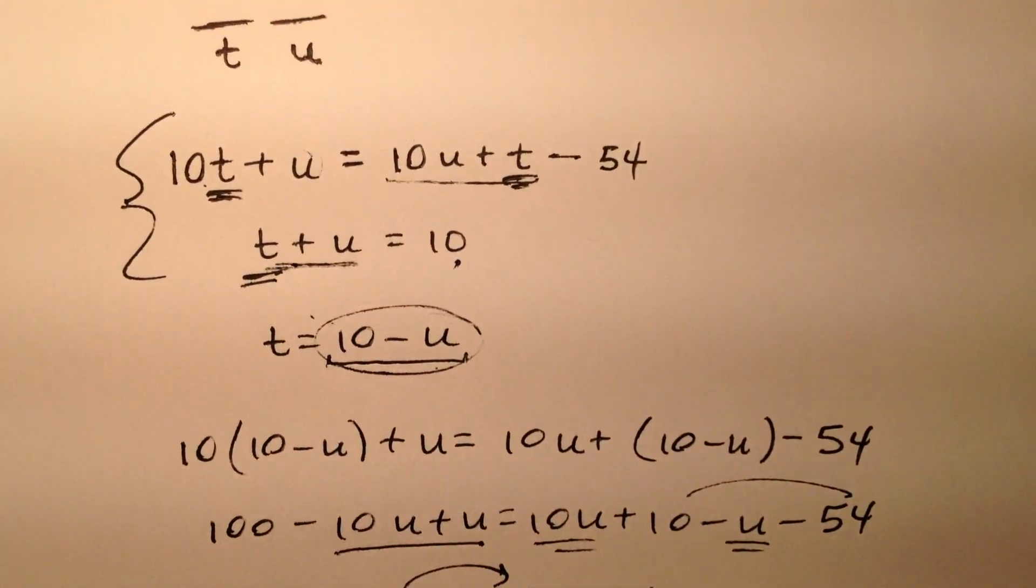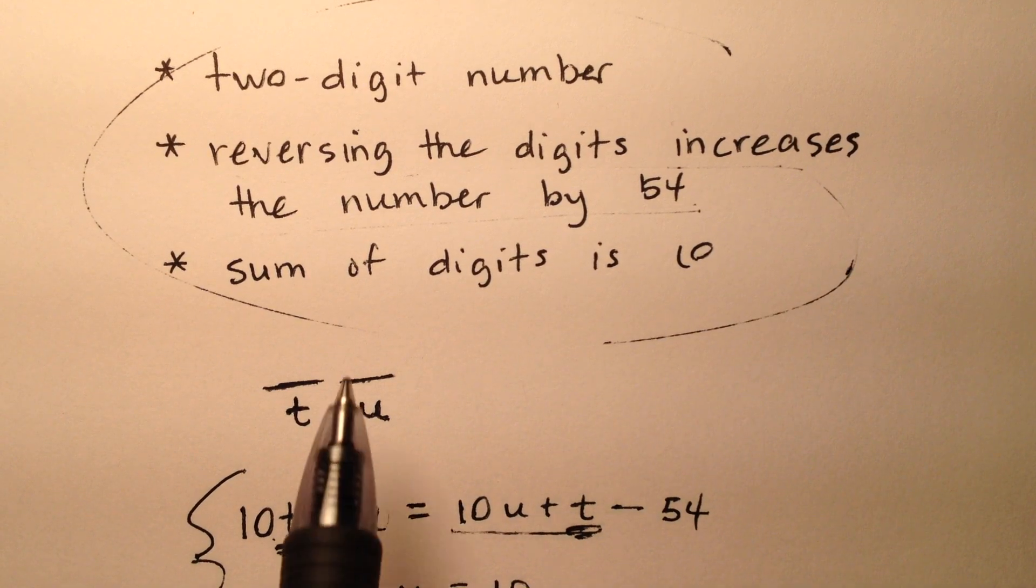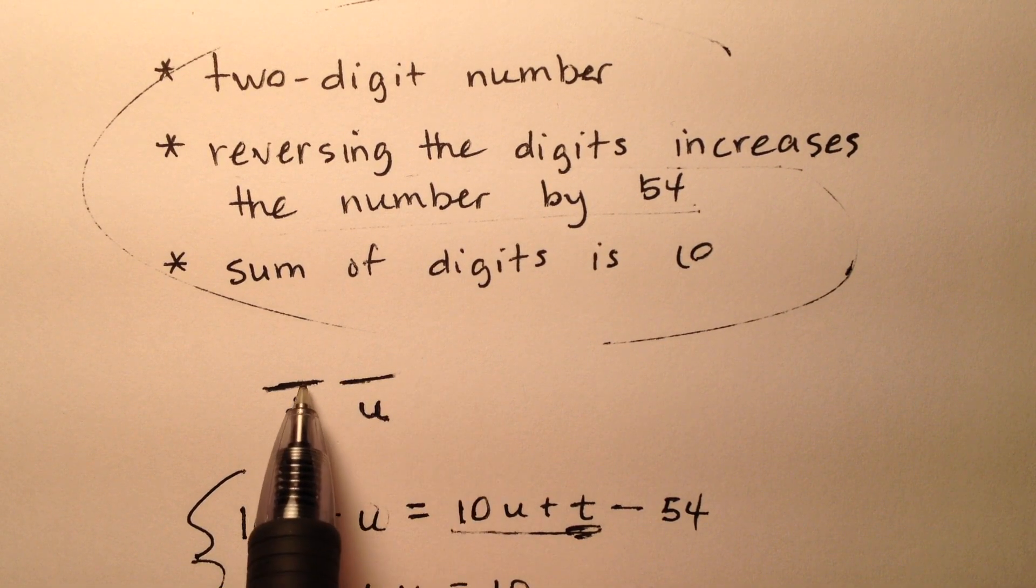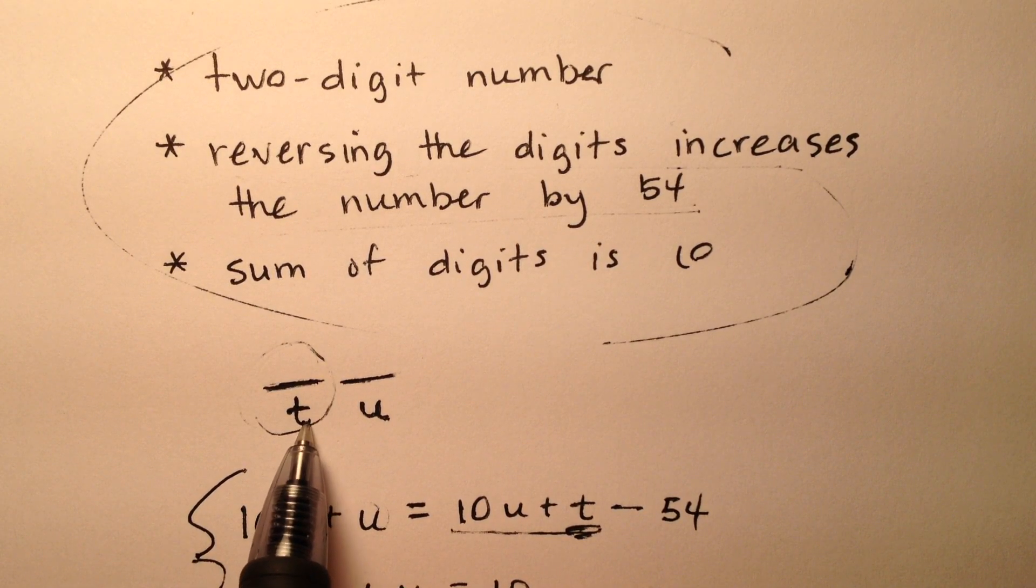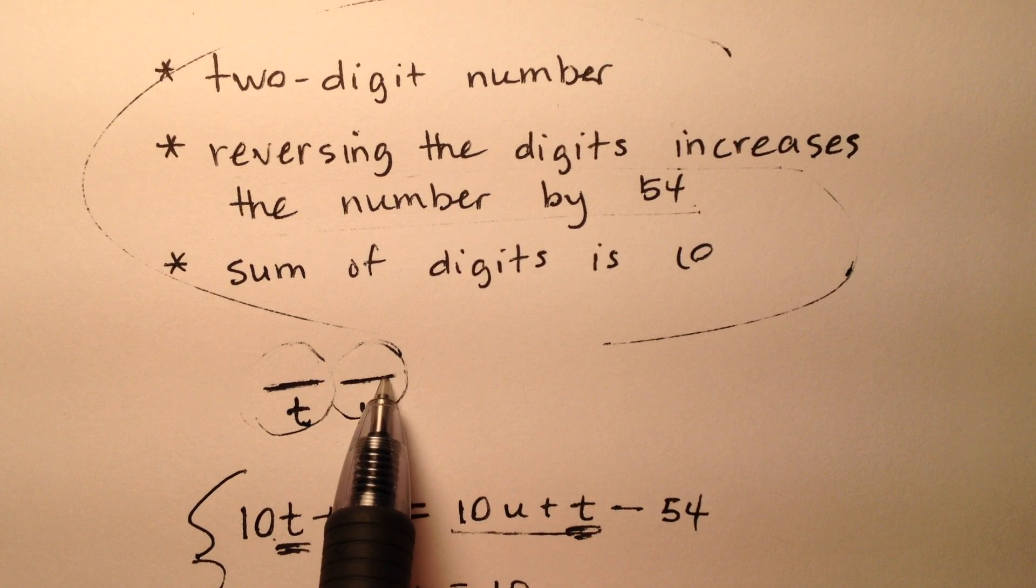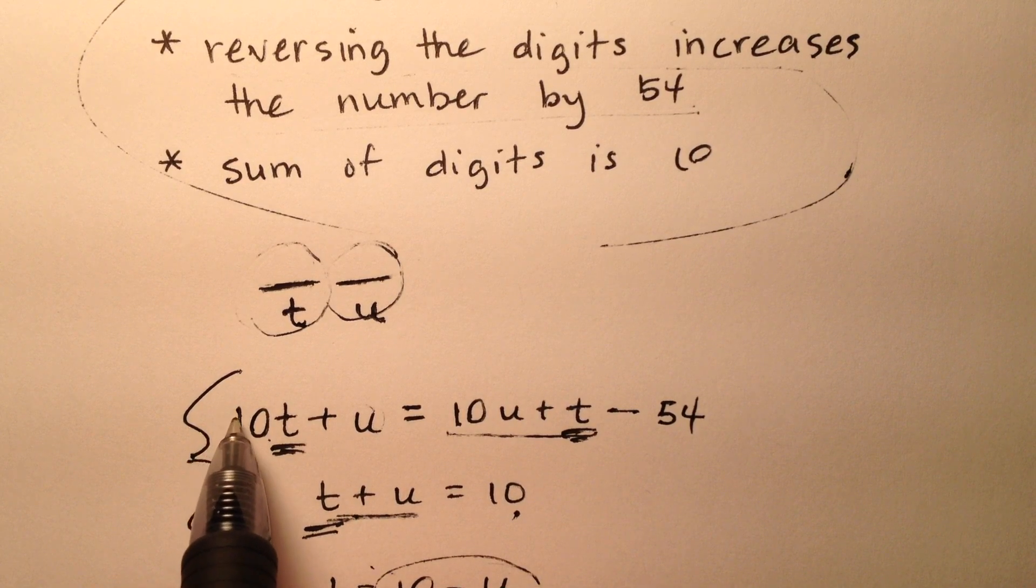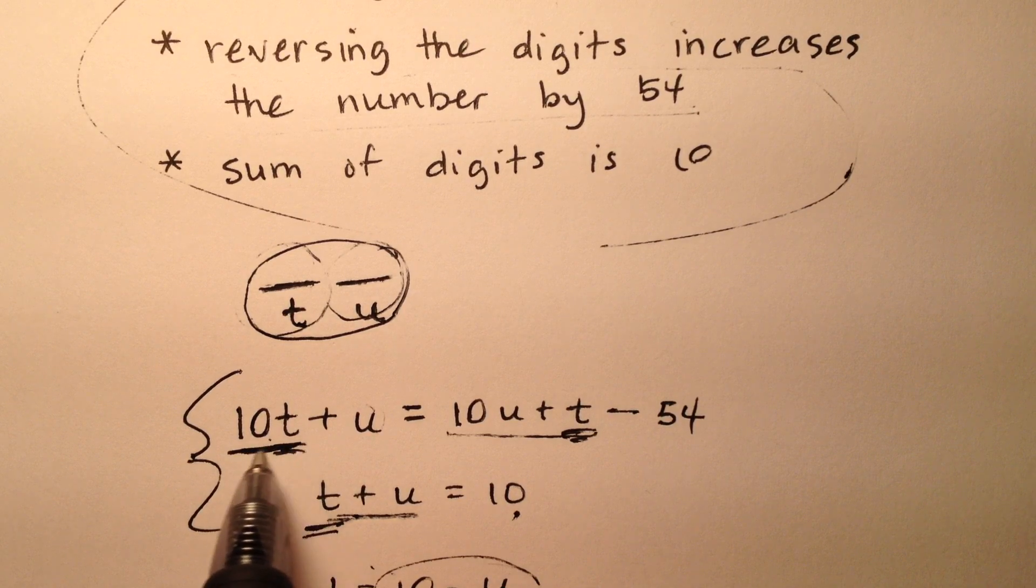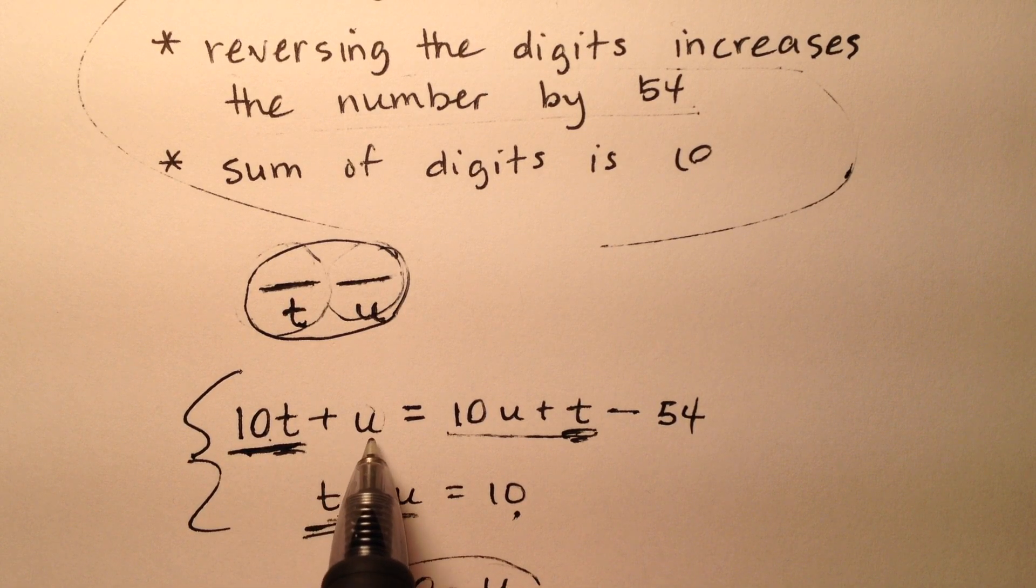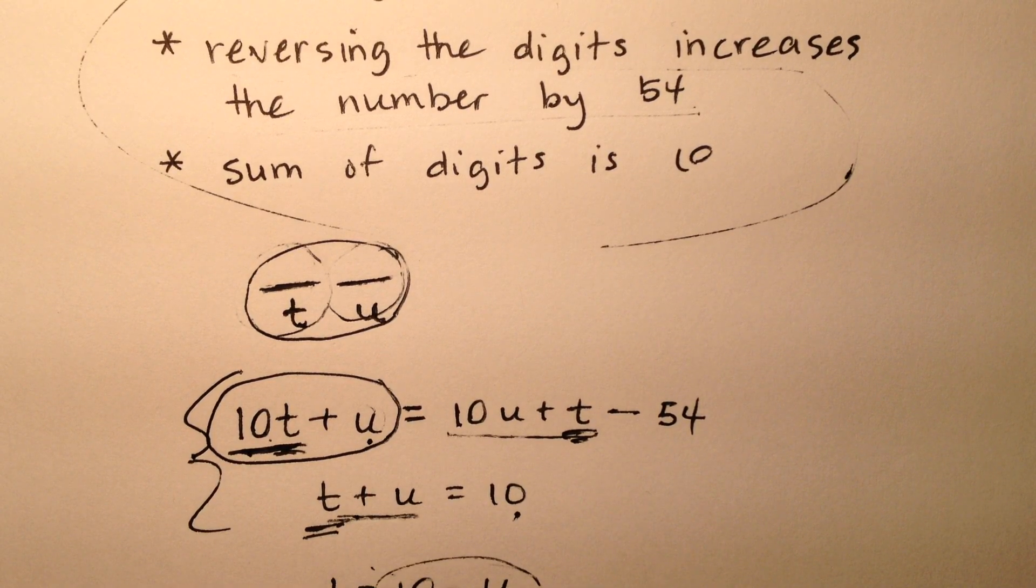Let's recap what just happened. We had our two-digit number with some information. When I set up my two-digit number, the tens place needed a variable—we called it T. The units place needed a variable—we called it U. The big relationship is: what's the value of this two-digit number? It's 10 times whatever digit is in the tens place plus the units. This is how we write the value of a two-digit number when each digit gets its own variable.